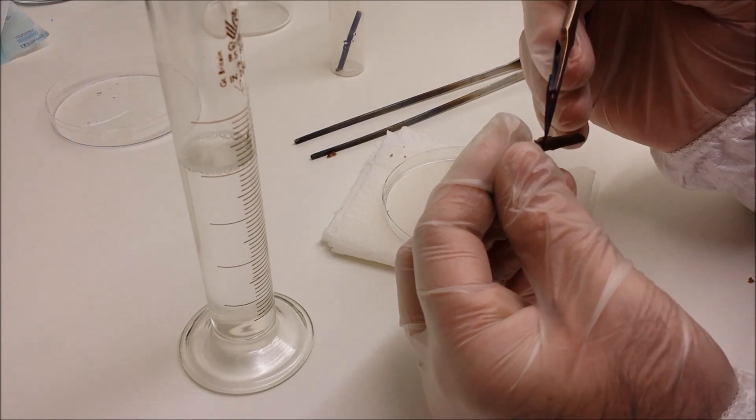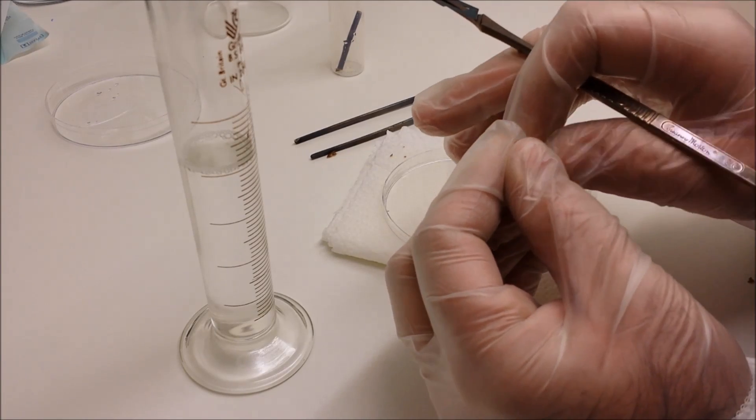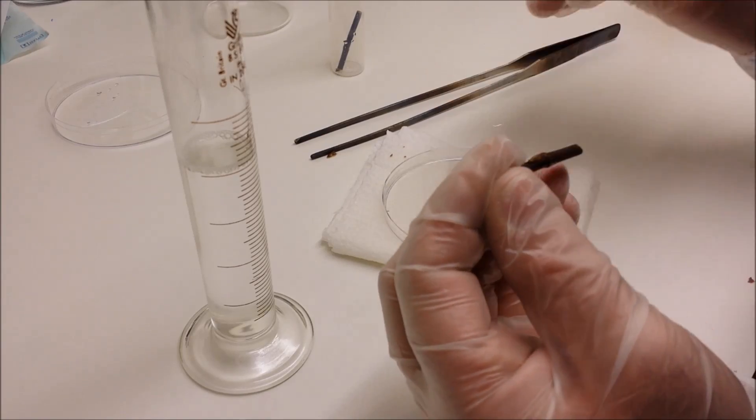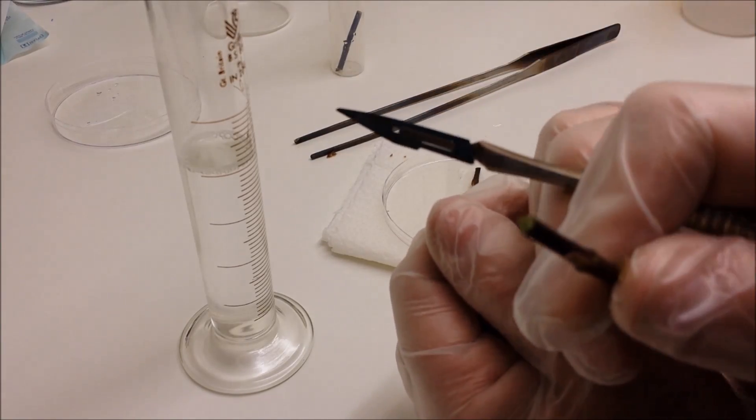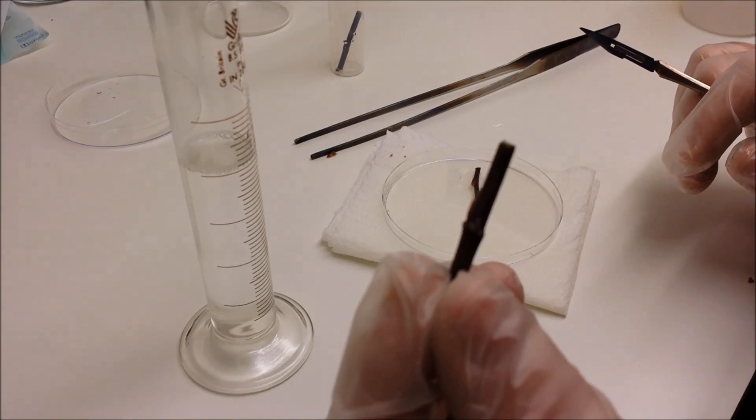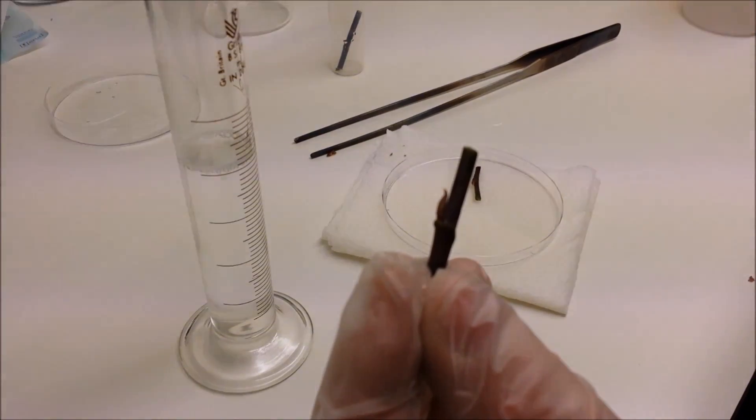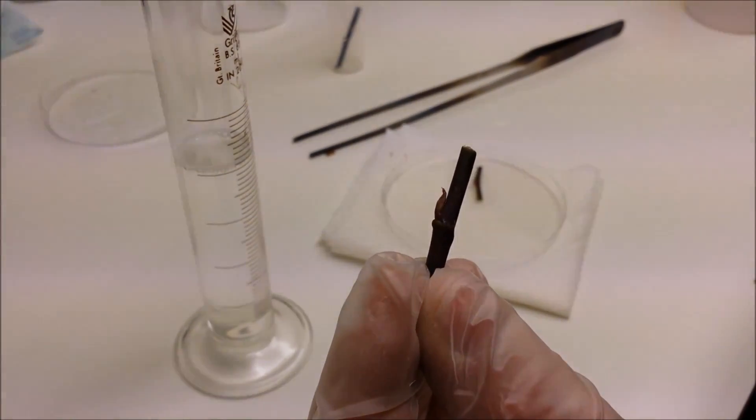And I'm using, you'll notice, the front sharp part of the scalpel as well as the back blunt side. So the sharp bit I'm using to make an incision into the sheath, and the reverse of it, the blunt side, I'm using to pull it down the stem. So hopefully now you can see that bud sticking out to the side, and that's what you're aiming for. That is what's going to become your little plant.